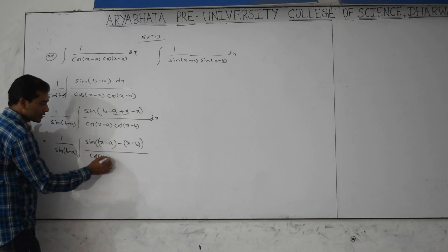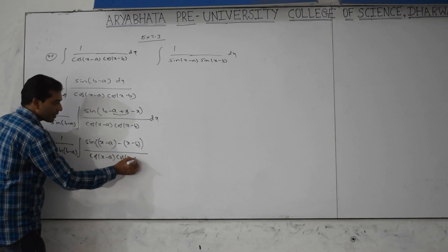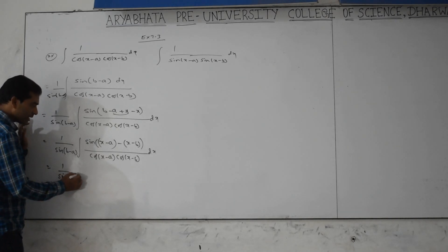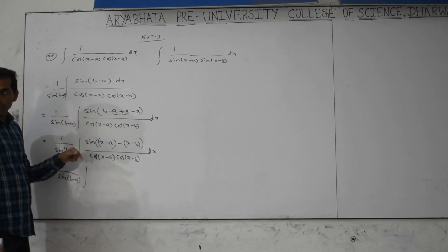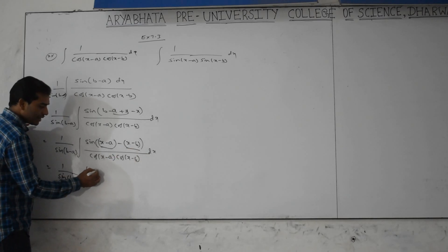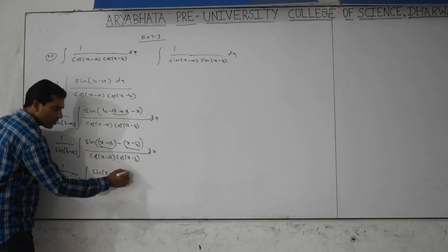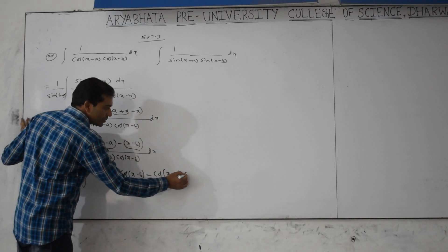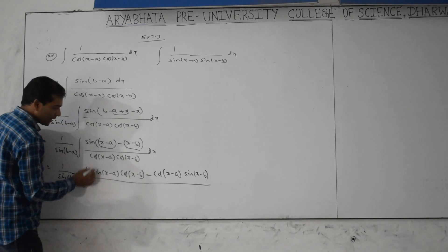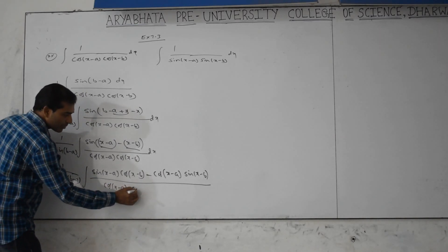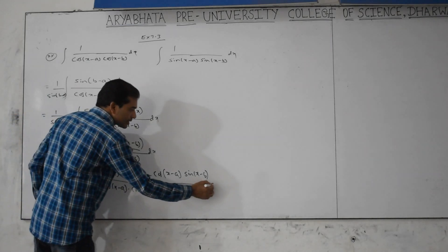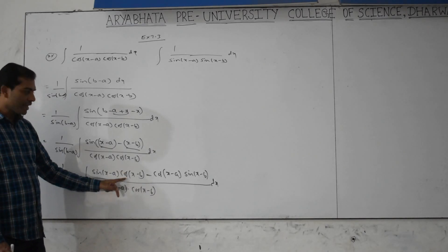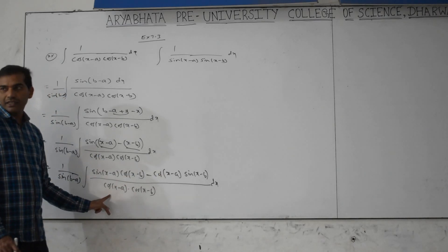Divided by cos(x minus a) into cos(x minus b) dx. This gives 1 by sin(b minus a), integration of sin(b minus a) over cos(x minus a) into cos(x minus b) dx. Putting this by this: cos(x minus b) gets cancelled; putting this by this: cos(x minus a) gets cancelled.